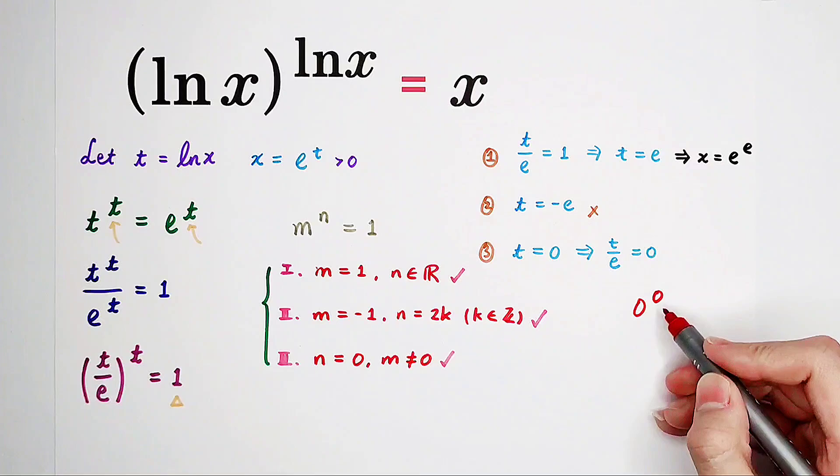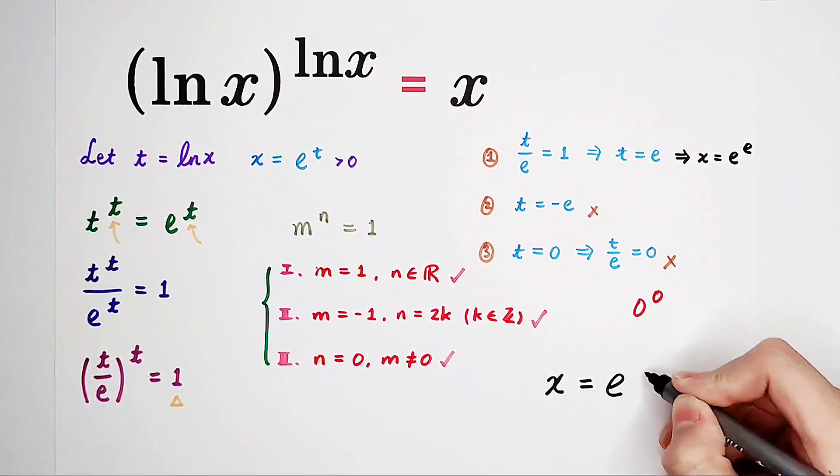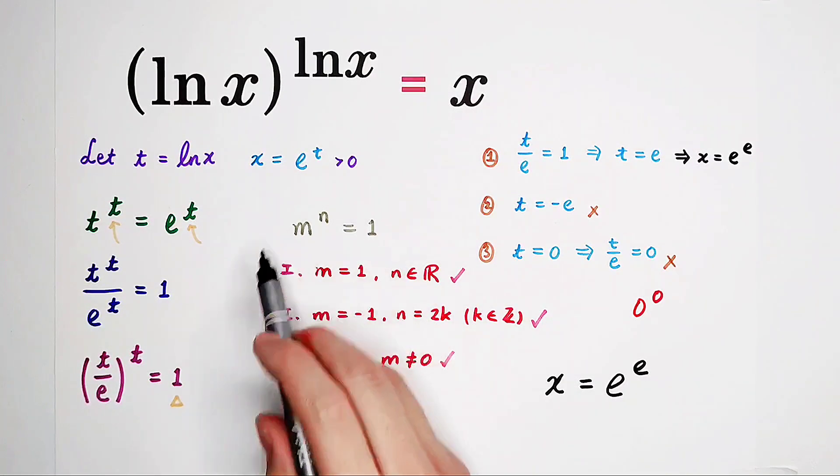Actually, the term 0 to the power of 0 doesn't make any sense. So we've only got one solution to our equation. And this solution is the only real solution. So x is e to the power of e. Do you get it? Do you get the trick? Do you get the key?